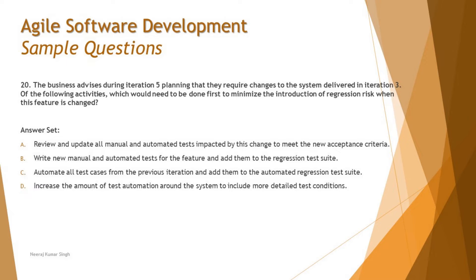Option C says: automate all test cases from the previous iteration and add them to the automation regression test suite. While this is a good practice in agile, it does not address the specific regression risk identified in this scenario. It's a generic statement — without a change, you would do this anyway. It is correct generally, but not specific to the scenario being discussed.